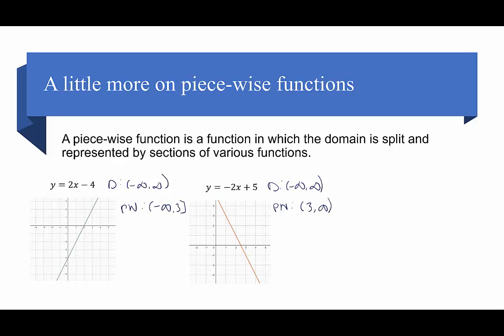It's really important to know that we can't have any overlap in the domain. So if 3 is included in the first piece, it cannot be included in the second piece. If it's included in both, then it's not a function — it's going to fail the vertical line test.